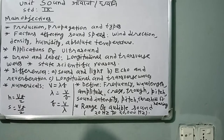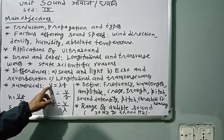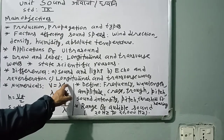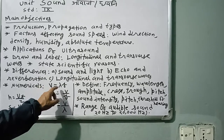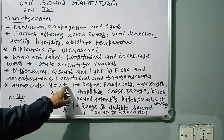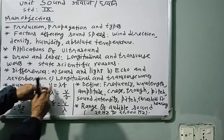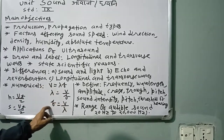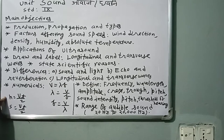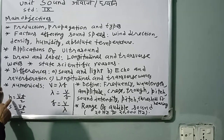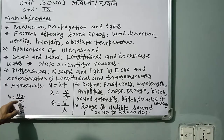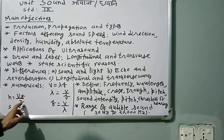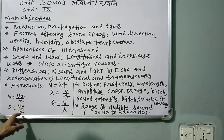Generally, longitudinal waves have low velocity and low energy, while transverse waves have generally high velocity and more kinetic energy. For numerical problems, to find the depth of the sea: distance equals velocity multiplied by time divided by two, since the time recorded is the total travel time there and back.